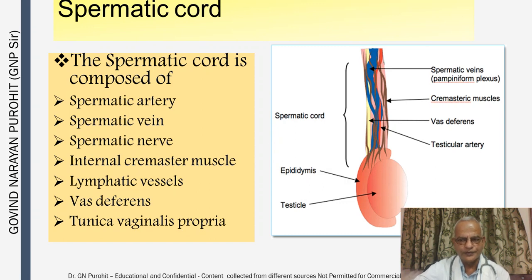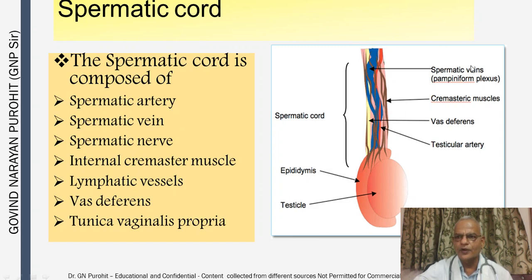The spermatic cord, through which the testes are held, is composed of the spermatic artery, spermatic vein, spermatic nerve, internal cremaster muscle, lymphatic vessels, vas deferens, and the tunica vaginalis propria. In this picture you can see the spermatic cord including the spermatic veins forming the pampiniform plexus, cremasteric muscles, vas deferens, and testicular artery, along with the epididymis and testicle.